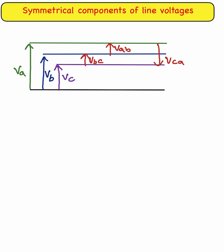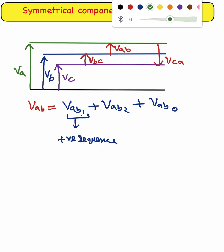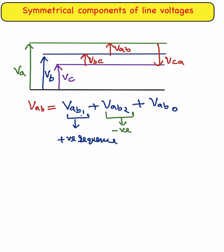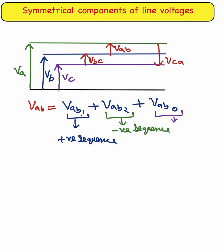So we can calculate the line voltages — the symmetrical components of line voltages. Vab is equal to Vab1 plus Vab2 plus Vab0. The notation 1 represents the positive sequence, notation 2 represents the negative sequence, and notation 0 represents the zero sequence. So Vab equals the sum of positive, negative, and zero sequence components.